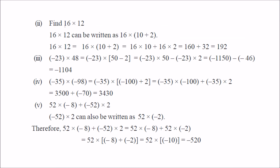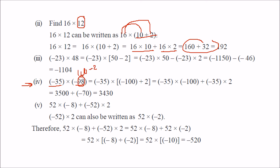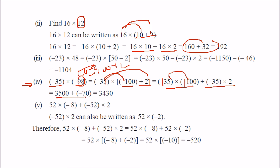For example, to multiply 16 into 12, write 12 as 10 plus 2. Multiply 16 with 10 to get 160, and 16 with 2 to get 32. Adding gives 192. Another example: minus 35 into minus 98. Write minus 98 as minus 100 plus 2. Distribute: minus 35 into minus 100 is plus 3500, and minus 35 into plus 2 is minus 70. So 3500 minus 70 is 3430.